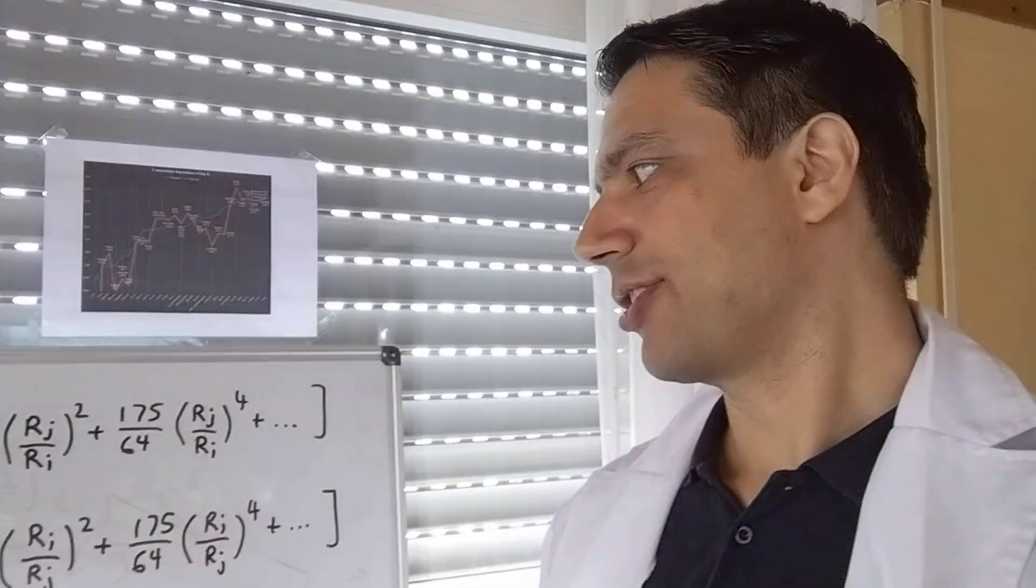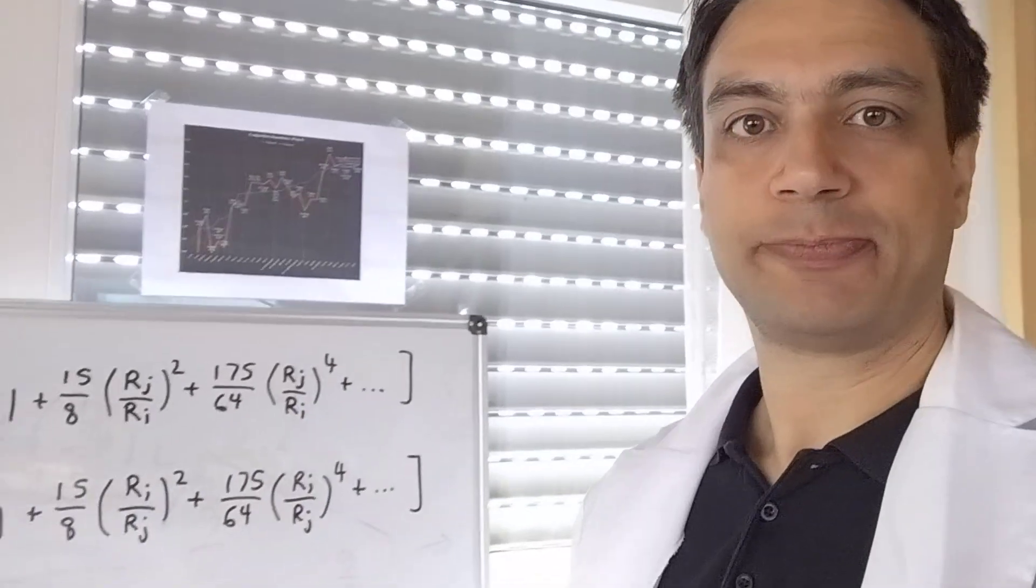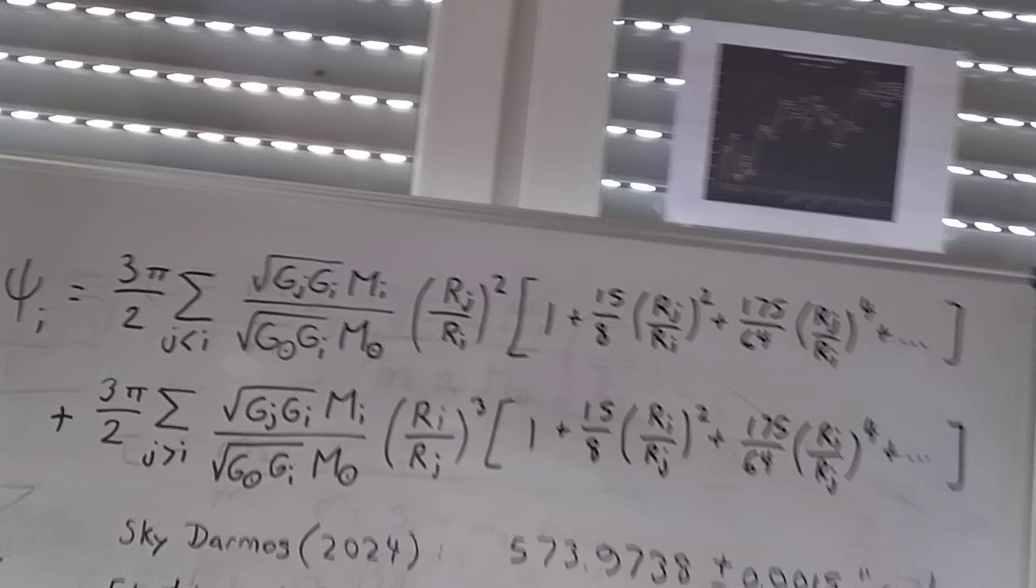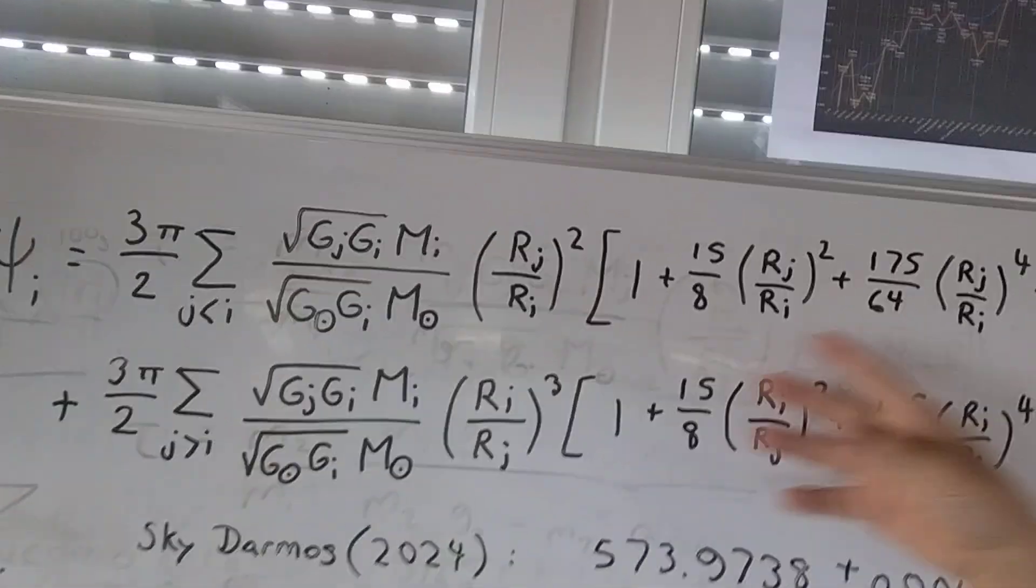So now let's get to the perihelion precession of Mercury. So this is how you calculate it.